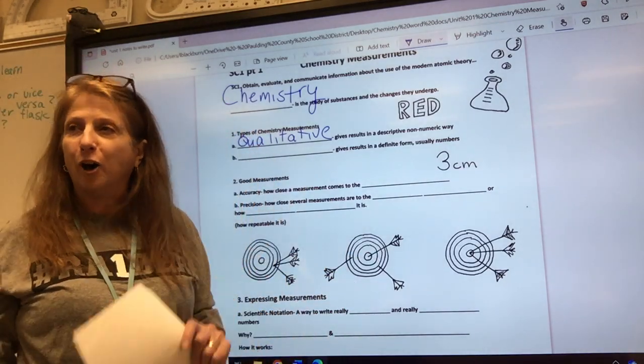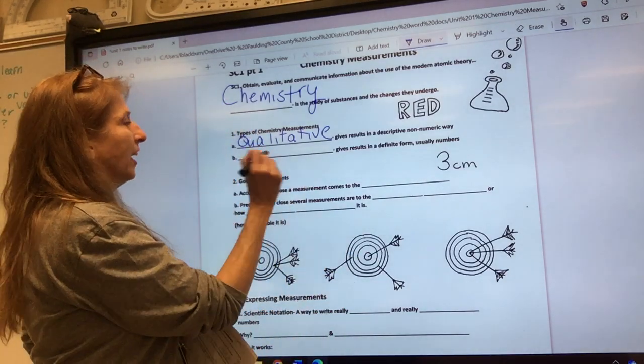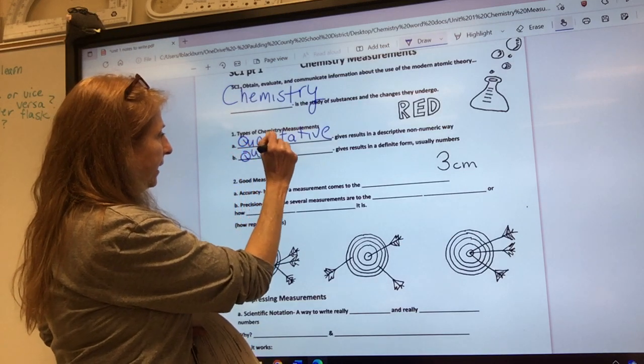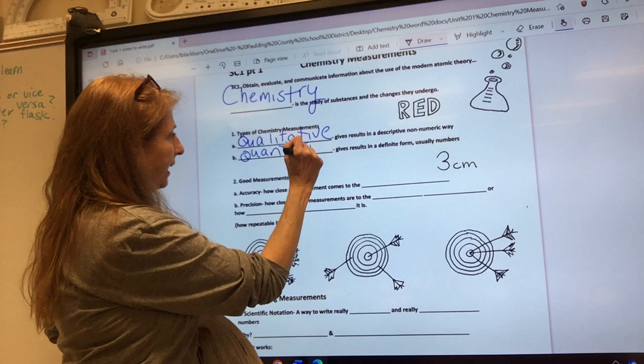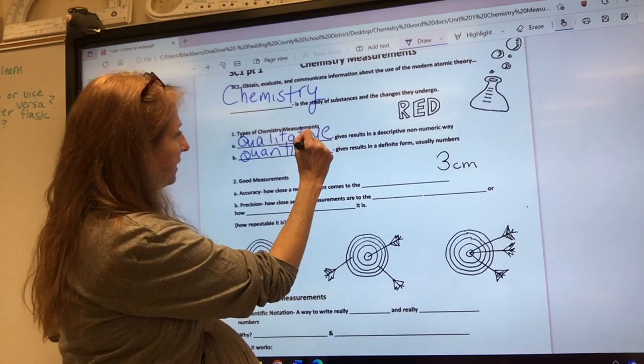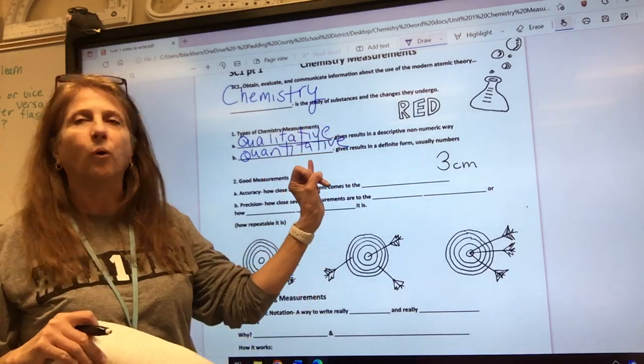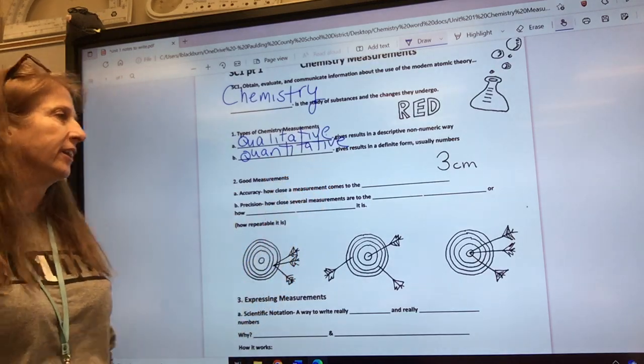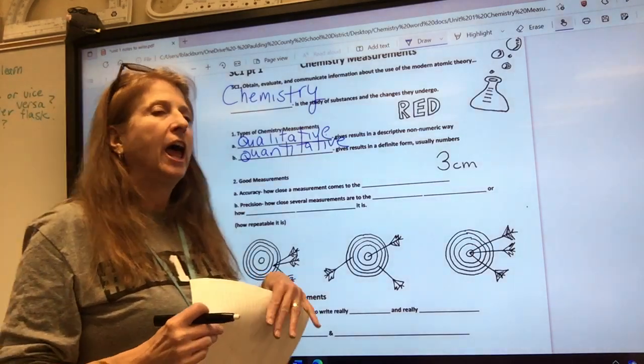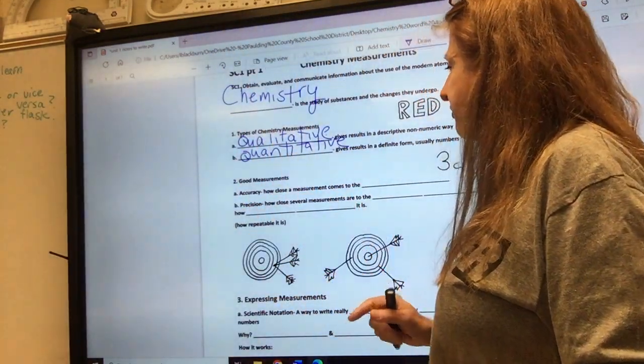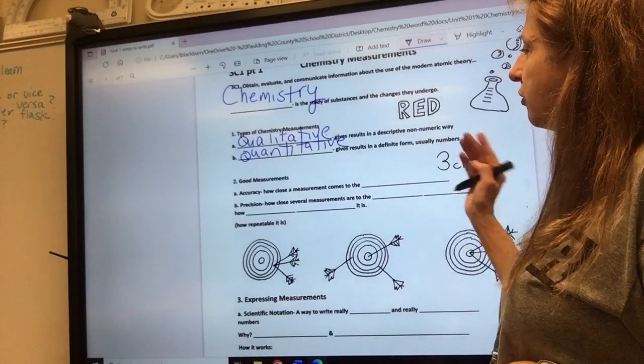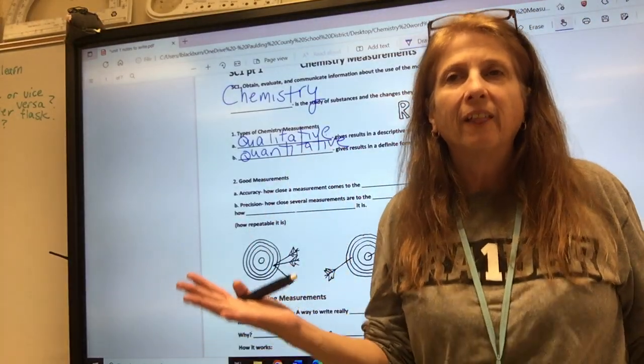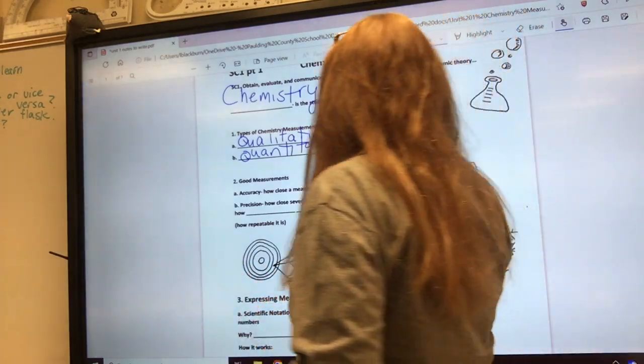So qualitative. The other one is quantitative. You can see the word quantity in there, how many, so that's pretty easy to keep straight. Good measurements have both accuracy and precision. Accuracy is how close a measurement comes to the truth, to the right answer.